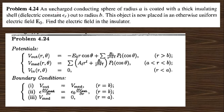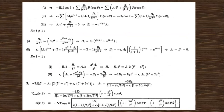The next question: an uncharged conducting sphere of radius a is coated with a thick insulating shell out to radius b and placed in an otherwise uniform electric field. Find the electric field in the interior. The same approach is used: write potential expressions for three regions, apply boundary conditions, and solve. For l not equal to 1 the coefficients vanish; for l=1 the constants are determined, giving the potential and electric field.